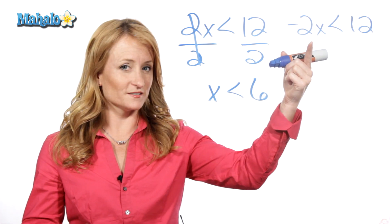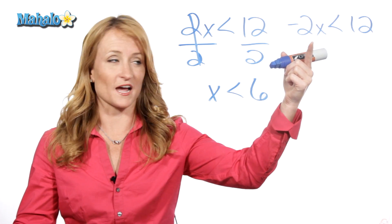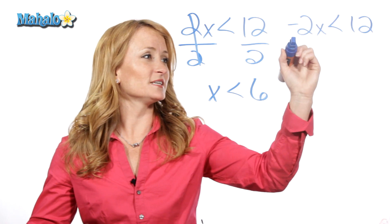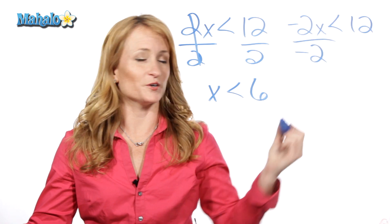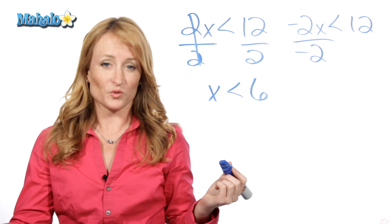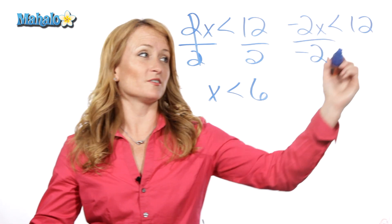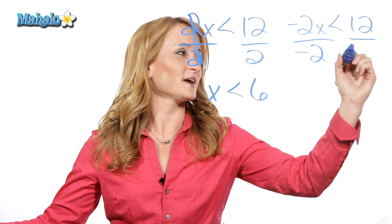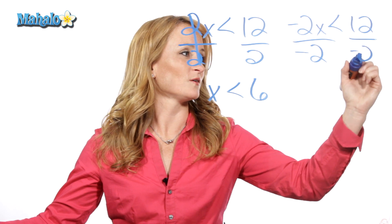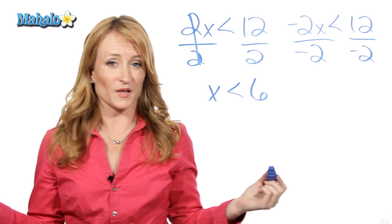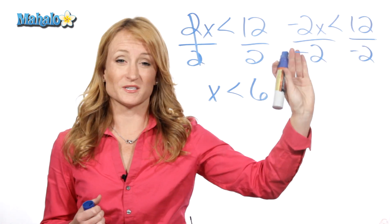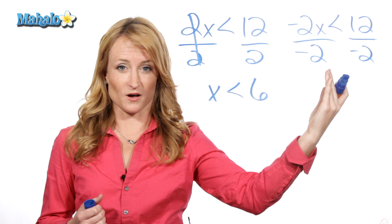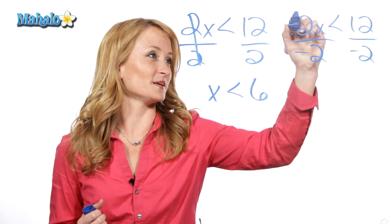However, here in solving for x, we would need to divide by negative 2. And the rule is, whenever you're dividing by a negative or multiplying by a negative with an inequality, you must flip that inequality.